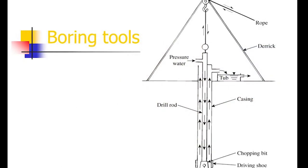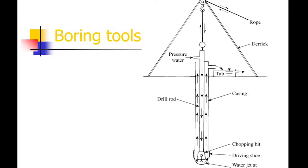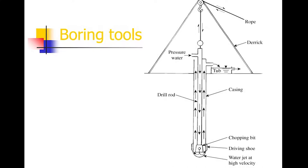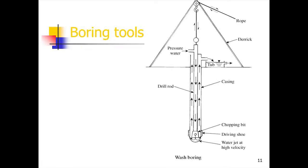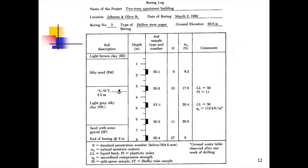For wash boring, water is pumped in and naturally removes the soil under pressure; it flows into a tub where the soil settles and the layers are recorded. The borehole log records: soil description, depth of boring, groundwater table location, soil sample type, SPT N value, water content, and any comments including Atterberg limits (LL, PL) from laboratory tests.